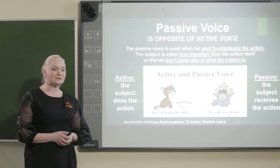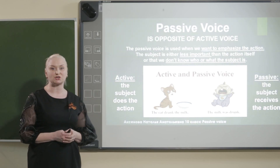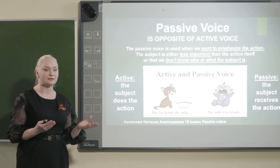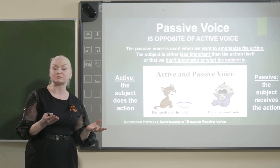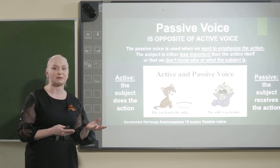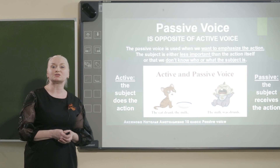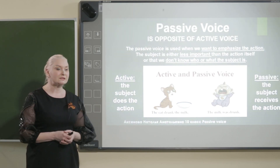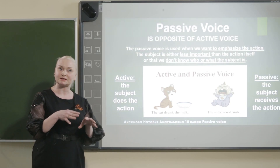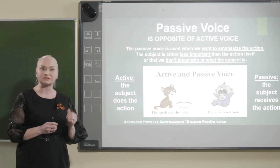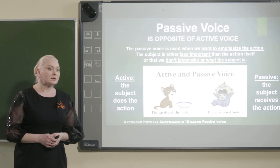So, what is passive voice? It's opposite to active voice. You can see the picture — the cat drank the milk. Кот выпил молоко. There is no milk for baby, and baby cries. So, the milk was drunk by the cat. Страдательный залог — когда действие совершается над каким-то объектом, а действительный залог — когда объект выполняет данное действие.